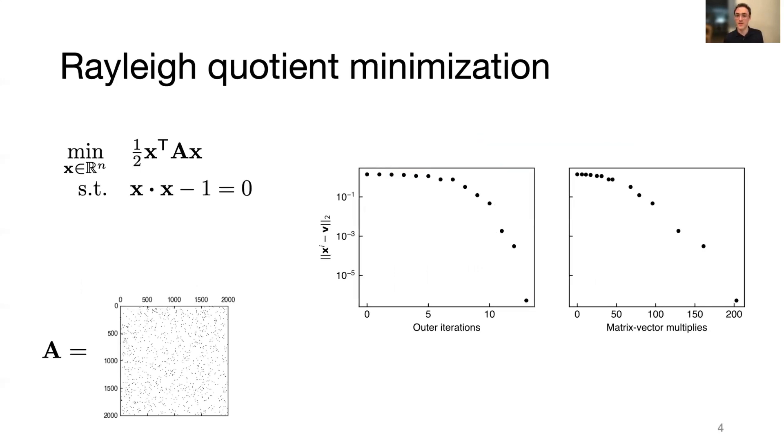To show you some examples of LFP-SQP in action, here's a classic problem of finding the unit norm eigenvector associated with the minimum eigenvalue of a matrix. For this sparse 2000 by 2000 matrix here, LFP-SQP converges in 13 iterations and requires a total of about 200 matrix vector multiplies among all subroutines.